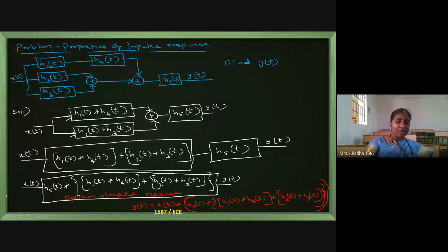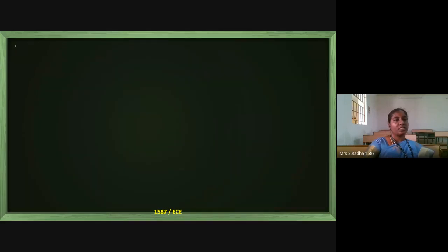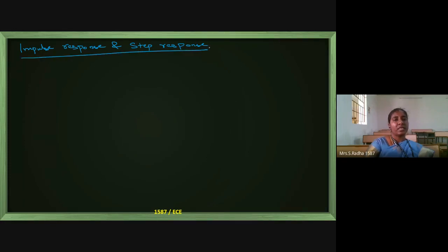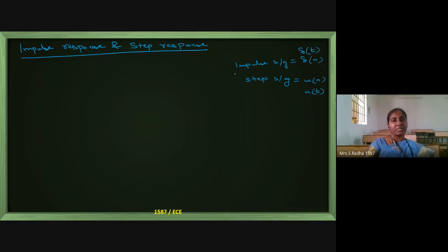Now I will go with what is step response and what is impulse response — the meaning of impulse response and step response. First of all we know impulse signal and step signal. Impulse signal means δ(N) in discrete time, δ(T) in continuous time. Step signal means U(N) in discrete time, U(T) in continuous time.